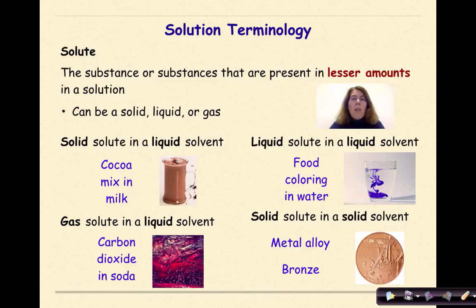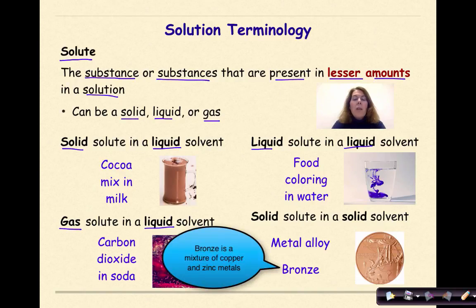Let's start off by talking about some solution terminology. The first term that you need to know is the term solute. Solute is the substance or substances that are present in lesser amounts in solution. Solutes can be a solid, a liquid, or a gas. An example of a solid solute in a liquid solvent could be something like cocoa powder in hot cocoa. An example of a liquid solute in a liquid solvent might be food coloring in water, or a gas solute in a liquid solvent could be carbon dioxide in soda.